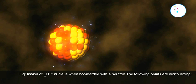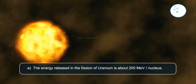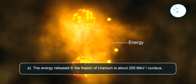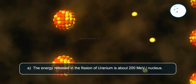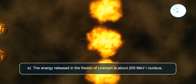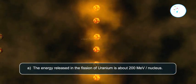The following points are worth noting. Point A: The energy released in the fission of uranium is about 200 mega-electron-volts per nucleus.